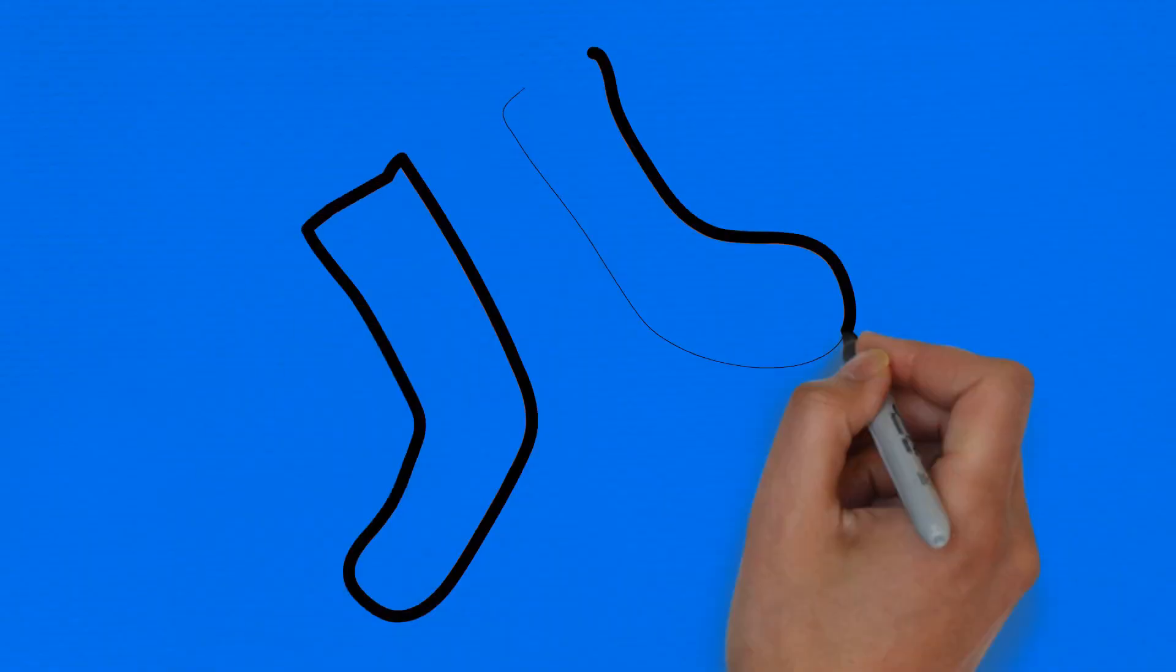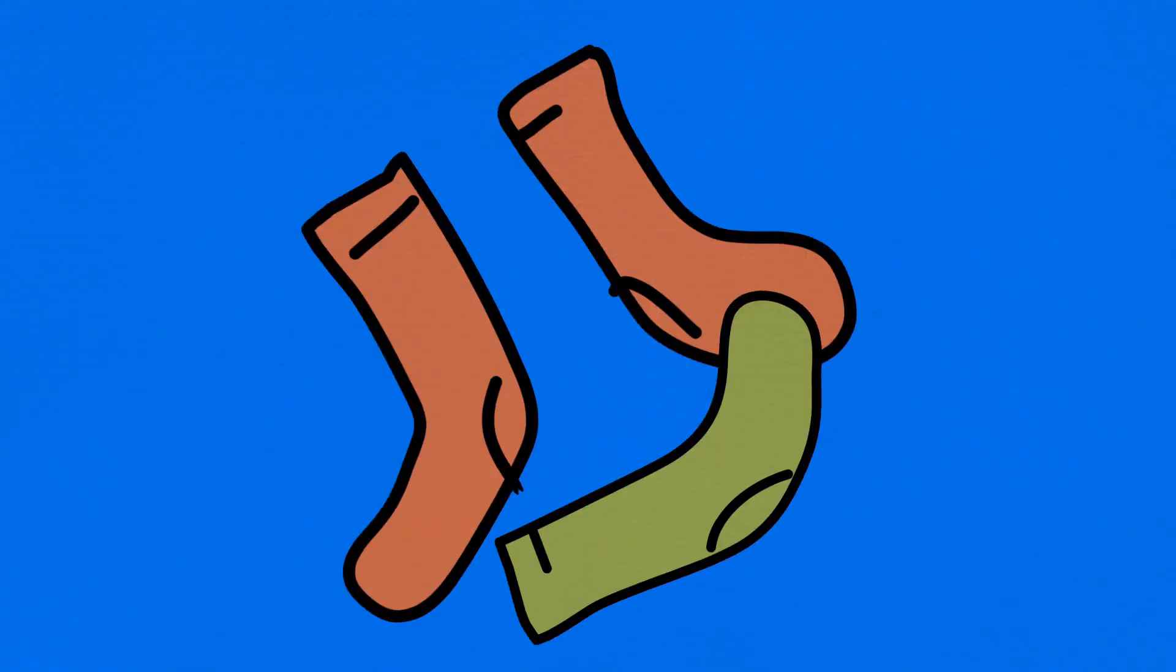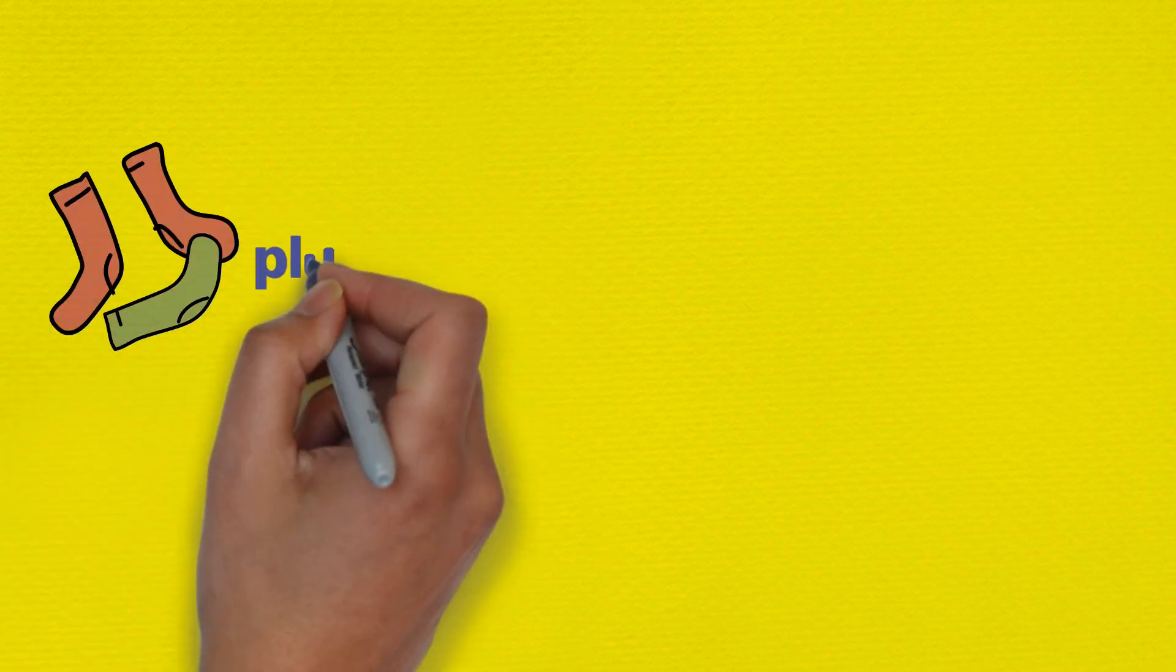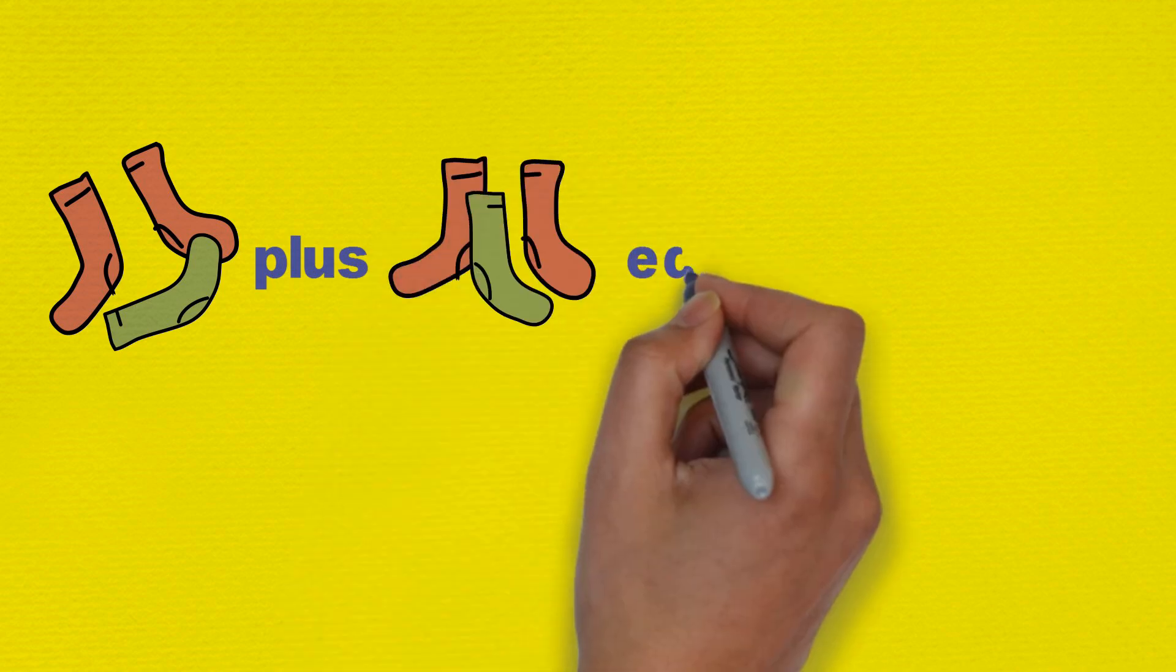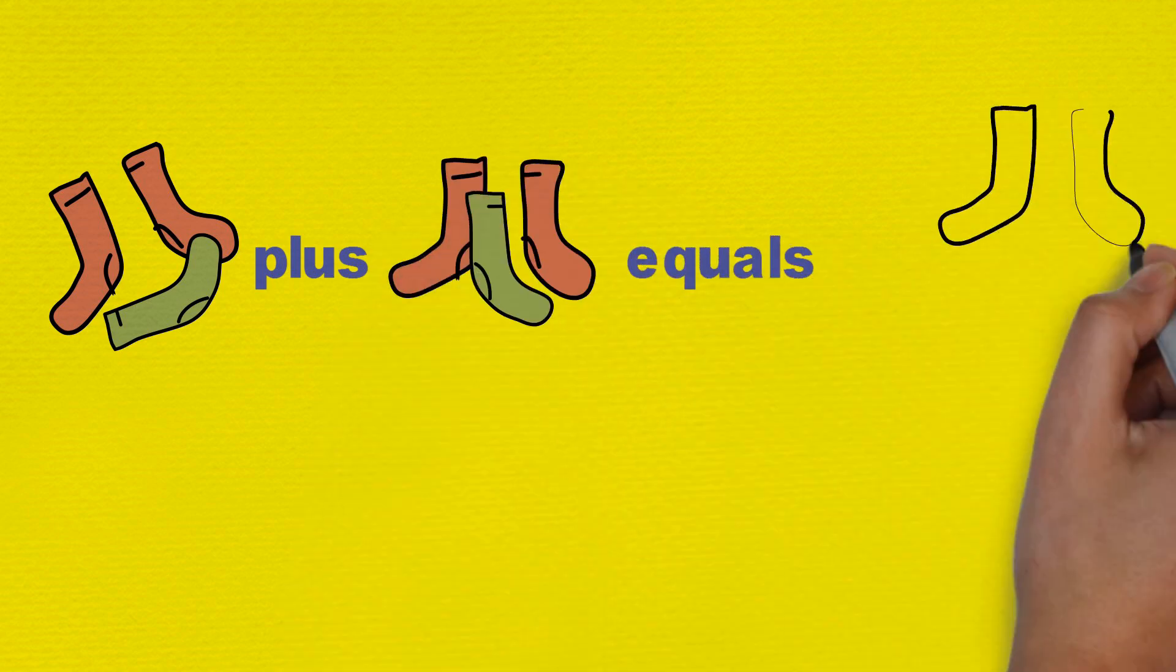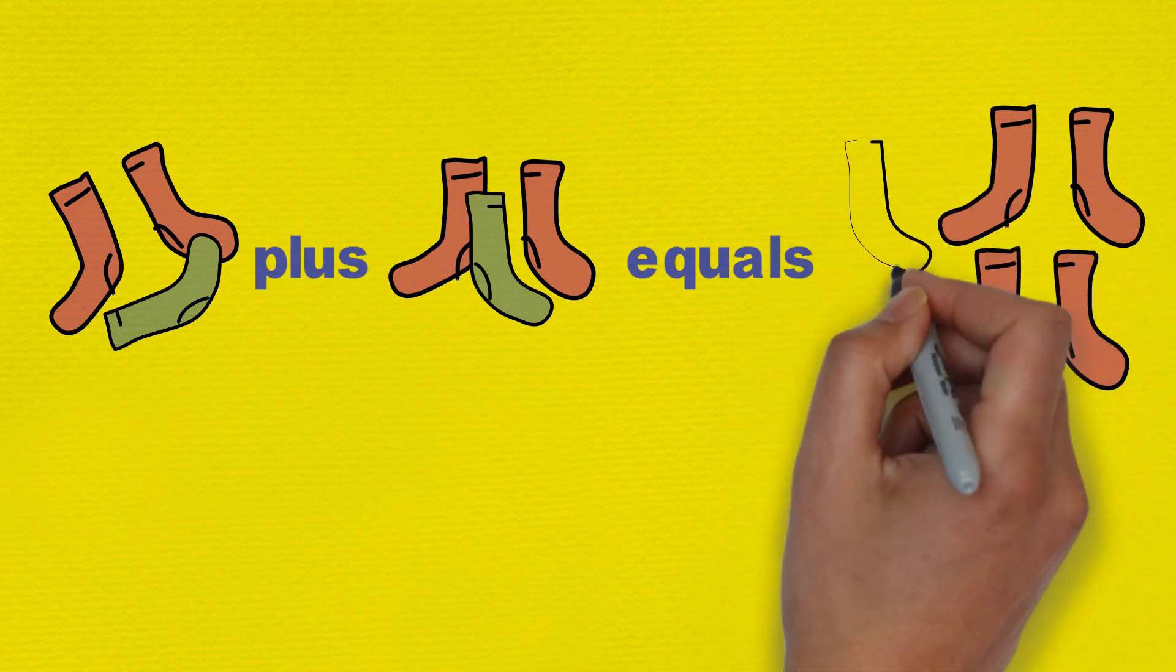Min then found three socks under her bed and added them to the three socks in her drawer. Three socks plus another three socks, is how many socks altogether? Let's show this using numbers and signs.